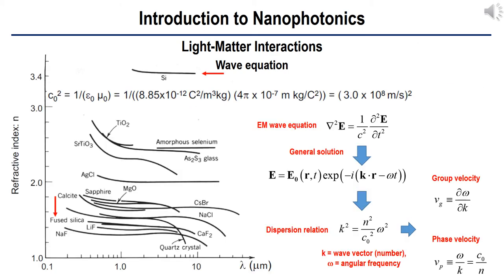It is important to investigate the refractive index of various materials for nanophotonics. Here are some examples of refractive indices of several materials in the wavelength range from 100 nanometers to 50 micrometers, covering ultraviolet, visible, near-infrared, mid-infrared, and far-infrared including terahertz range. As can be seen from the plots, most refractive indices are not constant over this wide wavelength range — this property is called dispersion of refraction.